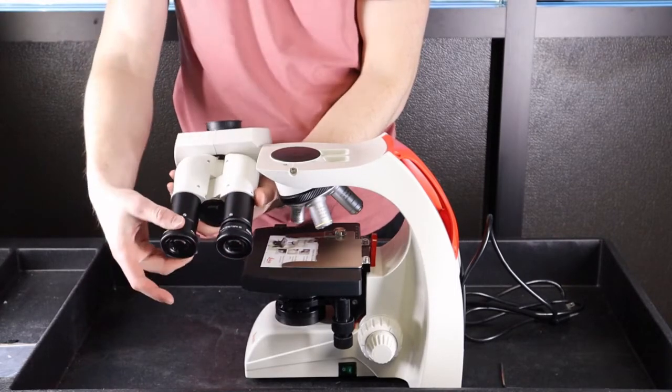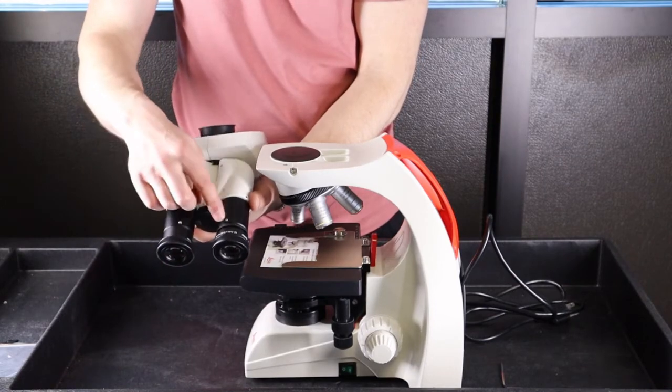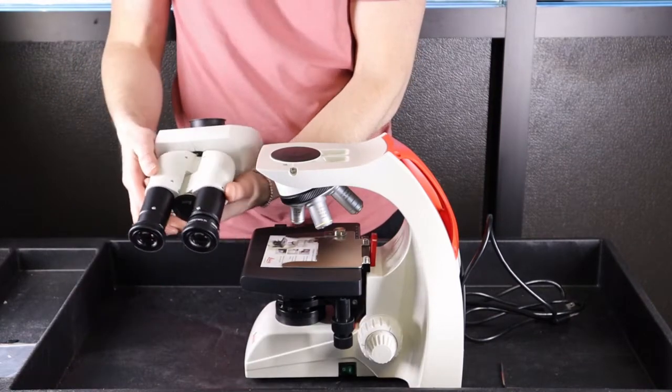If they're tightened, the eyepieces are locked in. To remove them, you simply loosen one of these screws and the eyepieces will come out.